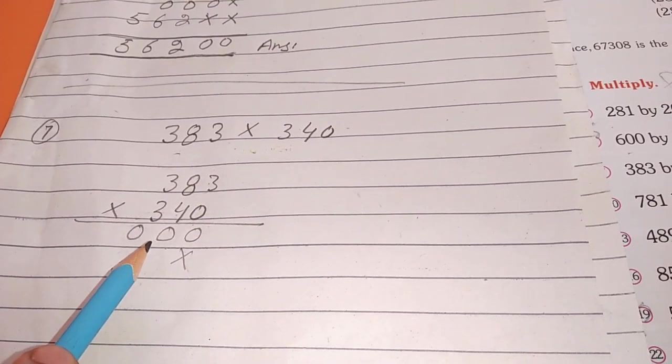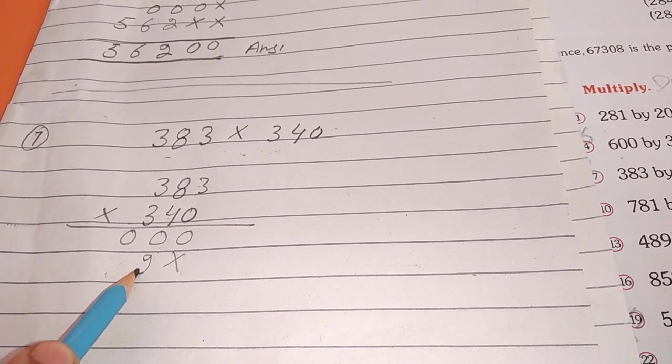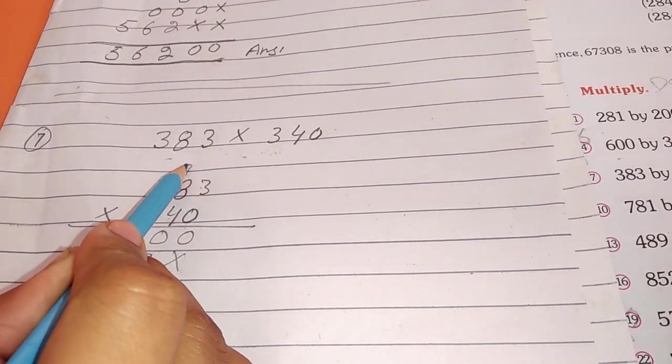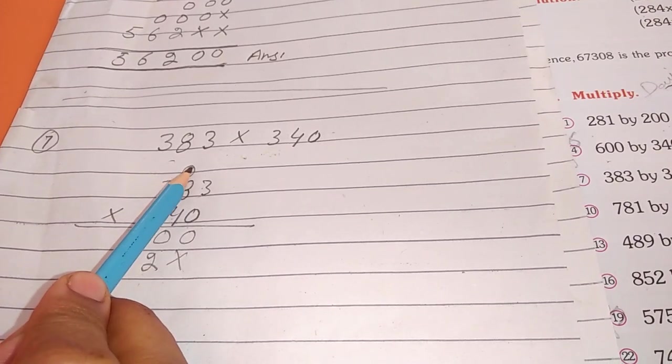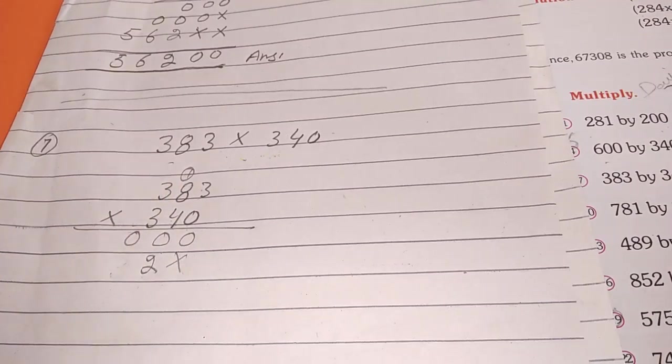Now, we have to read the 4 table. 4 times 3 is 12. 4 times 8 is 32. We add 1 to the 1, and then it will be 33.